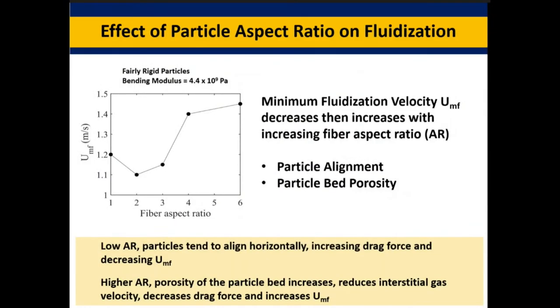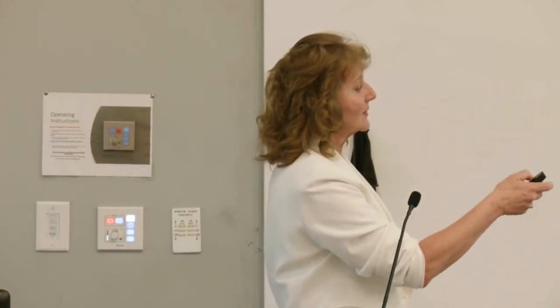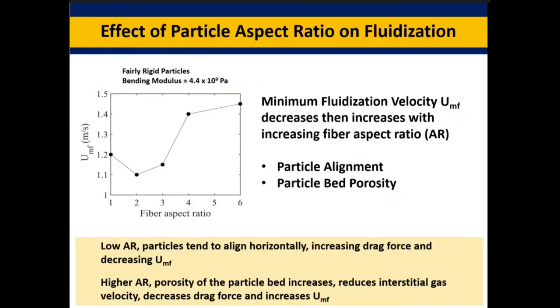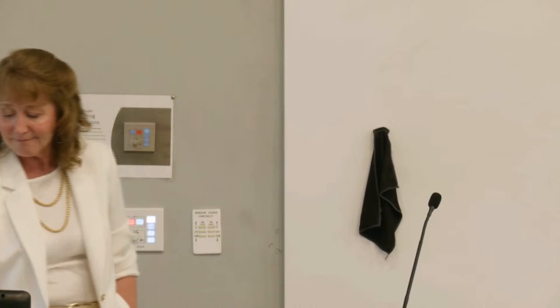With increasing rigidity, particles pack less tightly, so more porosity, less drag force, and increased minimum fluidization velocity. This has many applications in fibrous material flow — how fiber length and flexibility affect motion and mixing. We define a mixing index by dividing the fluidized bed into two regions and tracking what percentage of particles in the top region are renewed as a function of time. As fluidization velocity increased, the mixing index went up, and the mixing index was highest with an aspect ratio of two particle, which were the easiest to fluidize.